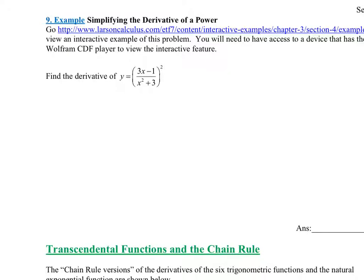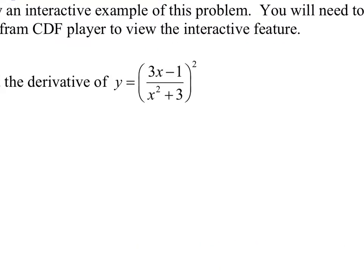Let's look at this one. There are several different ways of doing this problem. Because the exponent is only a square, you might be tempted to foil this out, distribute it, and then use the quotient rule. That might be the easier path, but the way the book does this — since it's in the chain rule section — is they want you to use the chain rule.